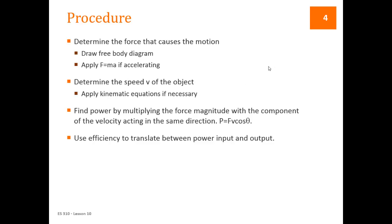Then we determine the speed of the object, V, because we have V in our power equation, right? P is equal to F dotted with V, which may mean that we need to apply kinematic equations to find V. And then we find power by multiplying the forces and the magnitudes with the component of the velocity acting in the same direction. So we're looking for parallel forces and velocities. Just like with work, we look for parallel forces and distances. And then if we have efficiency information, we can translate between the power input and the power output by using efficiency.